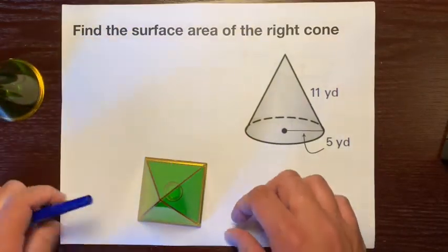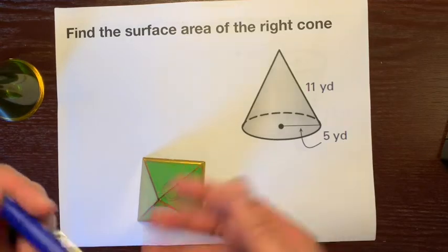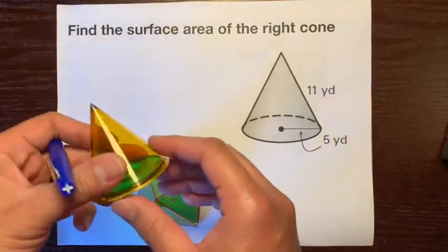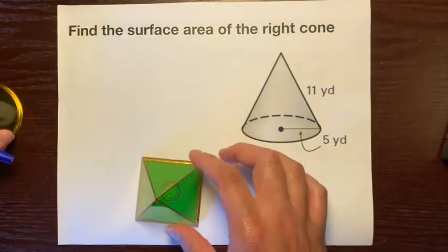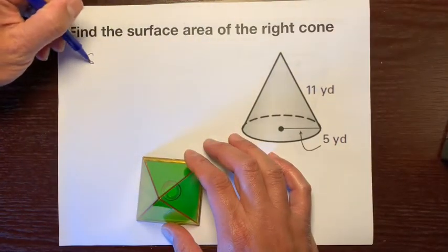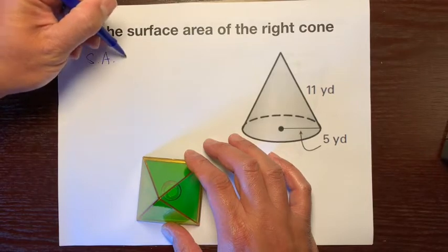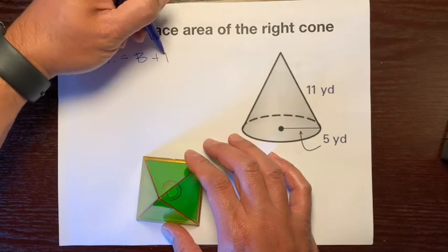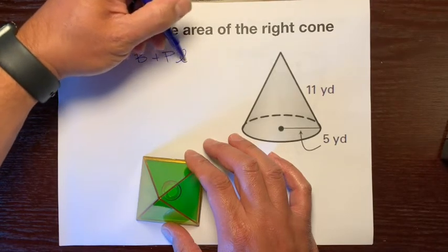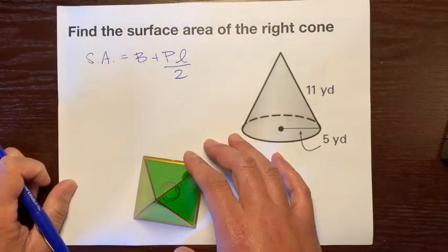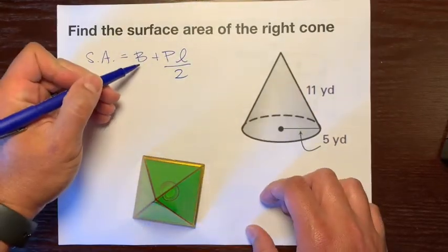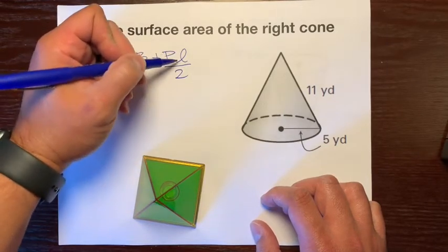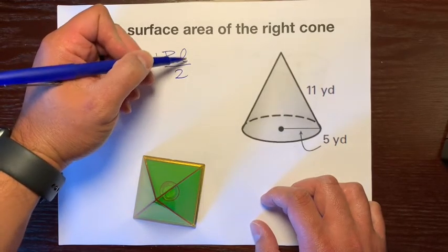The reason why I bring up the pyramid is because we're going to use the formula for the surface area of a pyramid to help us find the surface area of a cone. If you remember, surface area of a pyramid is the base area plus the perimeter times the slant height over two. B stands for base area, P stands for base perimeter, and L stands for the slant height.